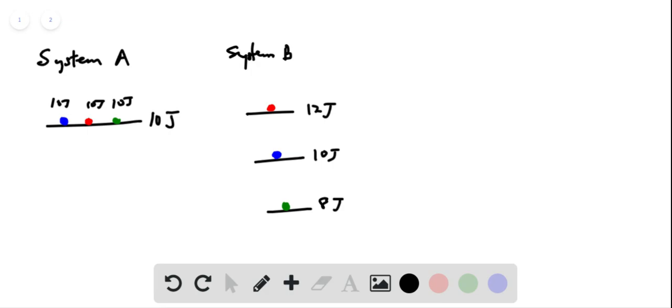And here we have 12 joules plus 10 plus 8, that is 30 joules in total. The question is asking in how many energetically equivalent ways can you distribute the particles in each system.